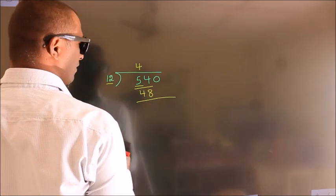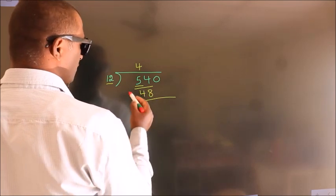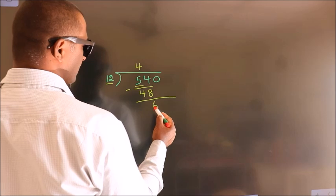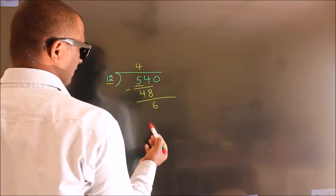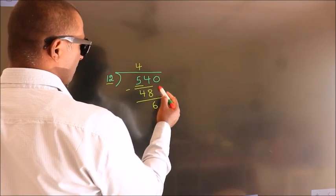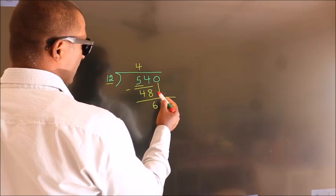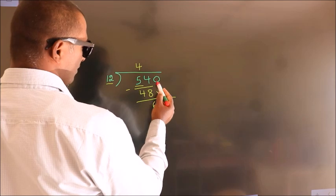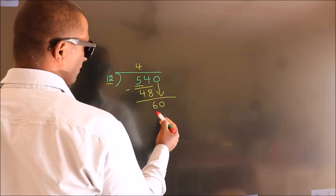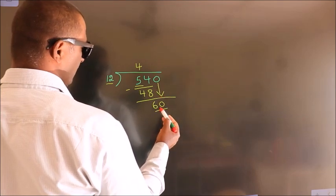Now we should subtract. We get 6. After this, bring down the beside number. So 0 comes down, making 60.